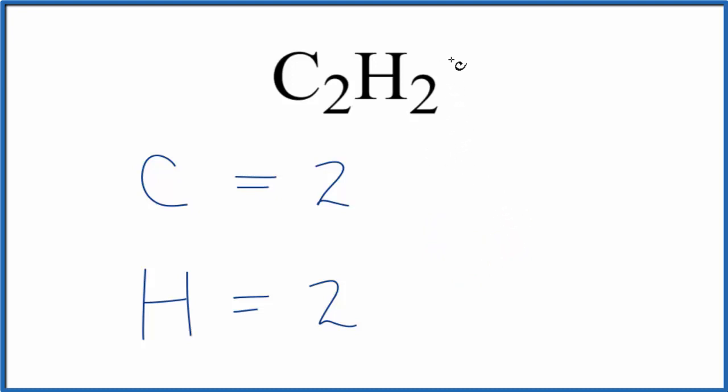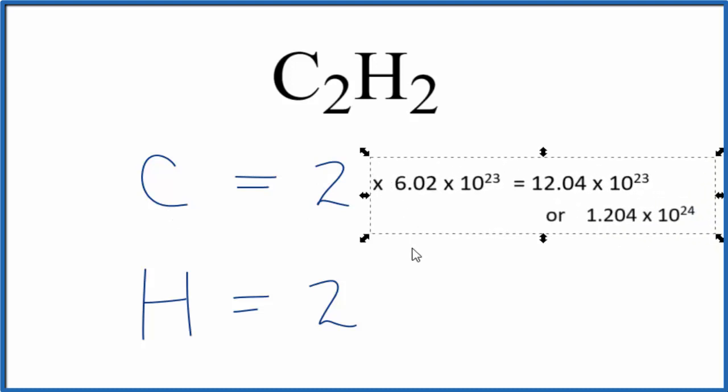To figure out how many atoms are in one mole of C2H2, to figure that out you'd take, say, the carbon, the number of carbon atoms, and multiply that by Avogadro's number. Two times Avogadro's number, we get 12.04 times 10 to the 23rd carbon atoms in one mole of C2H2. This would be the same thing for hydrogen since...